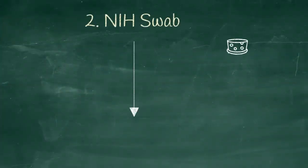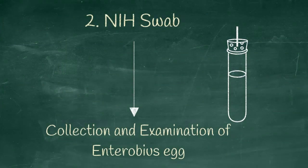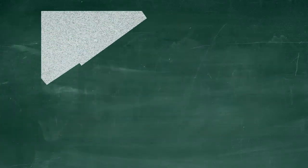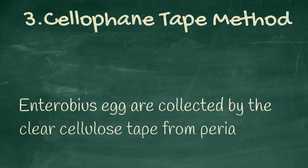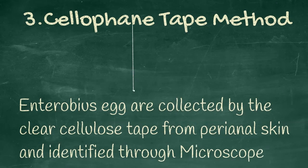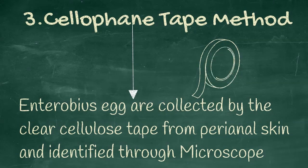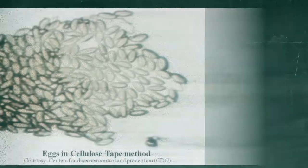Anal swab helps to collect and examination of the enterobius egg. You can see the enterobius egg. Cellophane tape method. Enterobius eggs are collected by the clear cellulose tape from the perianal skin and identified through the microscope. You can see the numerous egg in the cellulose tape.